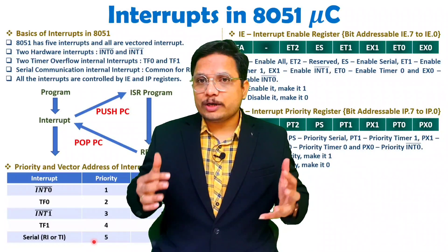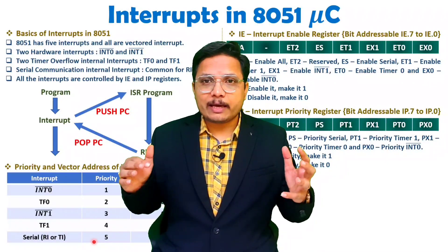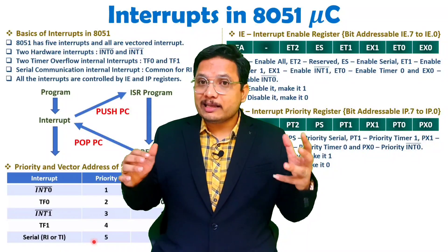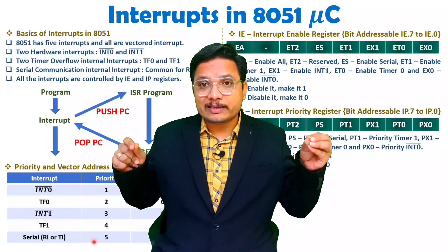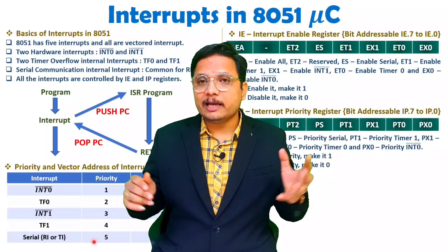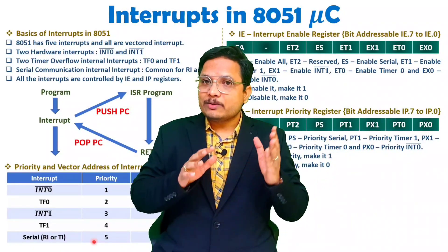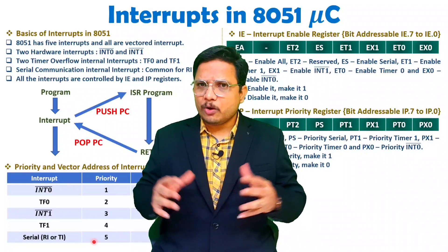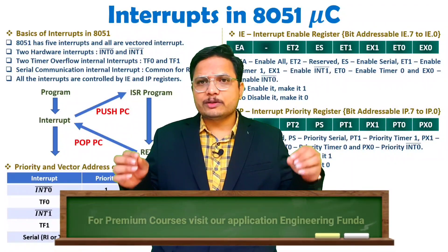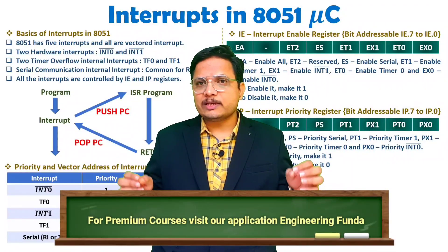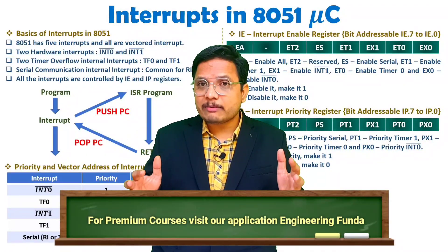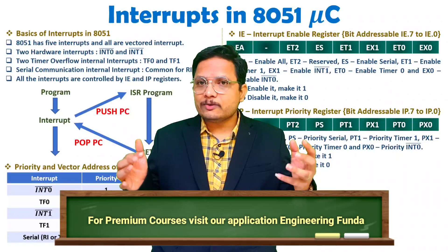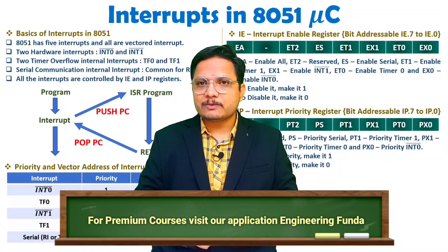That is how you control interrupts in 8051 — you can enable them and decide their priority using the IE and IP registers. I hope that is clear. If you have any confusion, post it in the comment box and I will be happy to help. Thank you so much for watching this video.